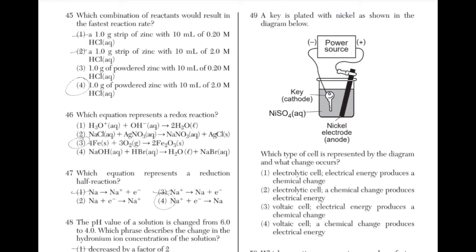A key is plated with nickel as shown in the diagram. Which type of cell is represented, and what change occurs? In the diagram, electrical energy is being converted into chemical energy because the power source is a battery, signified by the positive and negative ends. Since electrical energy is being converted into chemical energy, the answer is 1 — this would be an electrolytic cell. A voltaic cell is when chemical energy is converted into electrical energy.